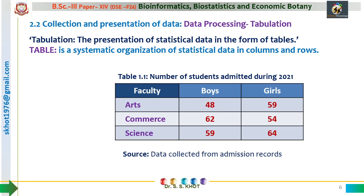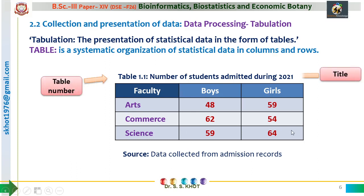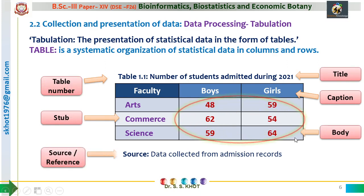Each box in the table is called a cell. The captions are the headings of the columns — here we have captions: boys and girls. The stubs include arts, commerce, and science, representing the faculty. The remaining cells form the body of the table. We can therefore label the parts as: table number, title, caption, stub, and body. Finally, we have the source — for this table, the data is collected from the admission records, so the source note helps identify the author and reliability of this data. In this way, raw data may be classified and then presented in the form of a table like this one.